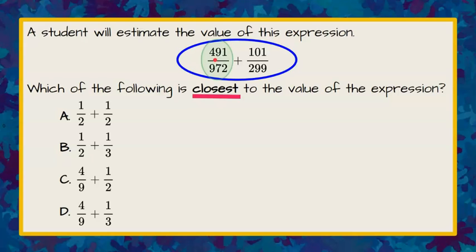So to estimate, we're going to start with our first fraction, and we're going to look at the numerator. 491 rounded, or estimated, is closest to 500. 972, our denominator, I would estimate to be 1,000.